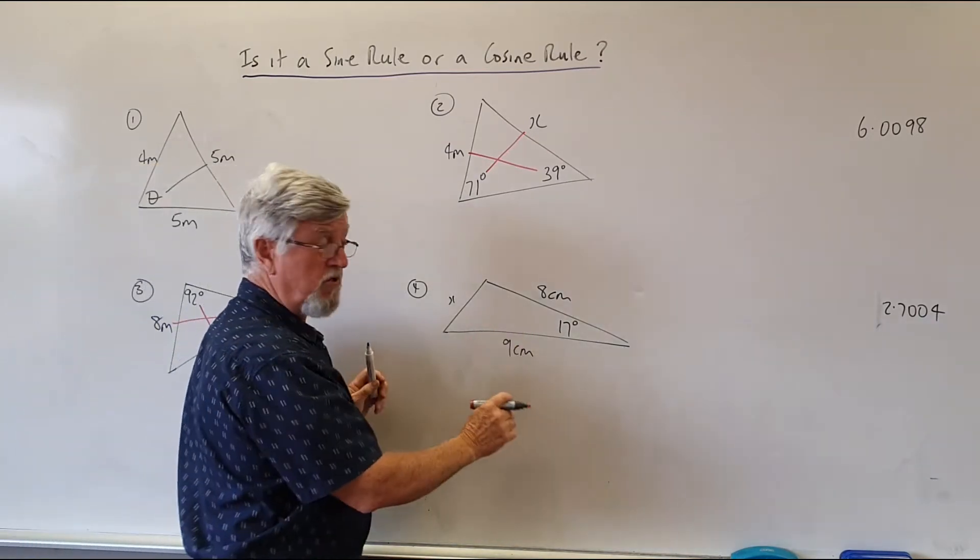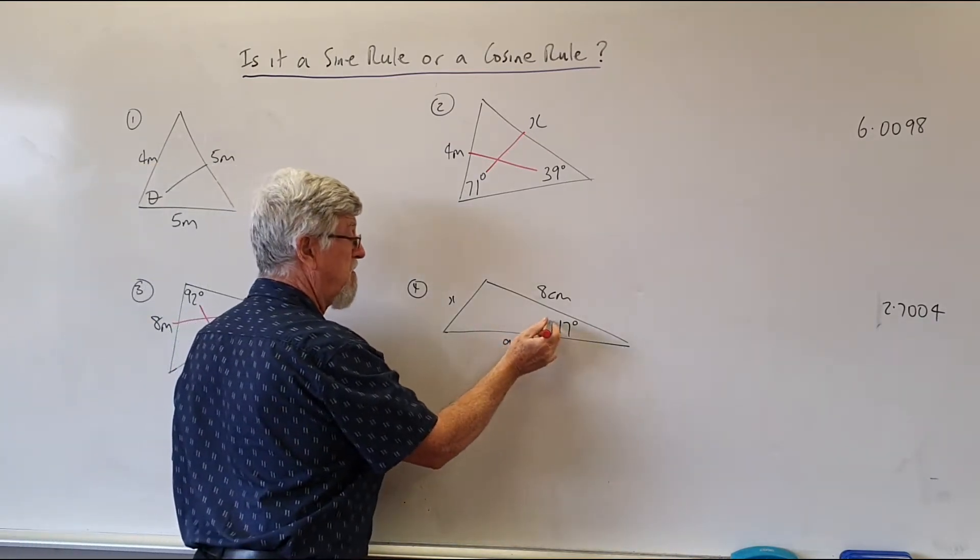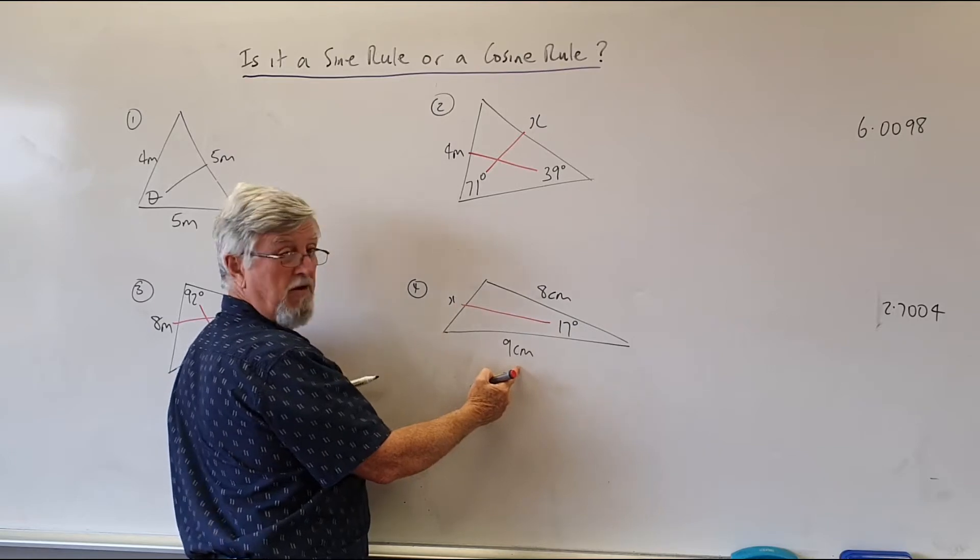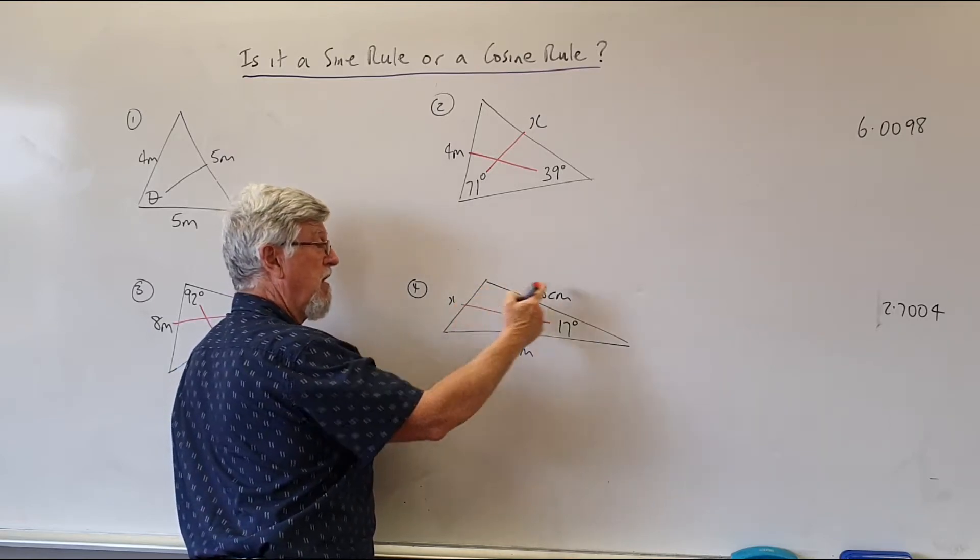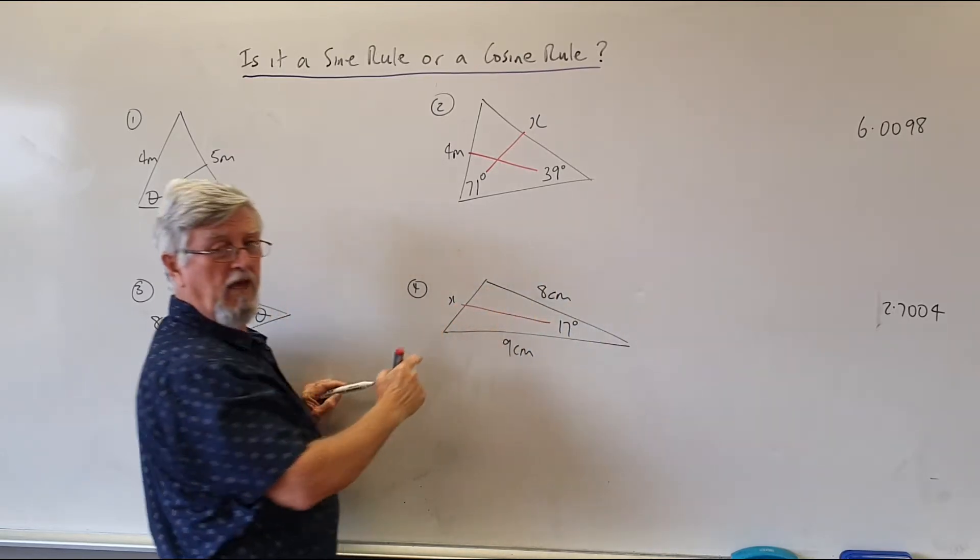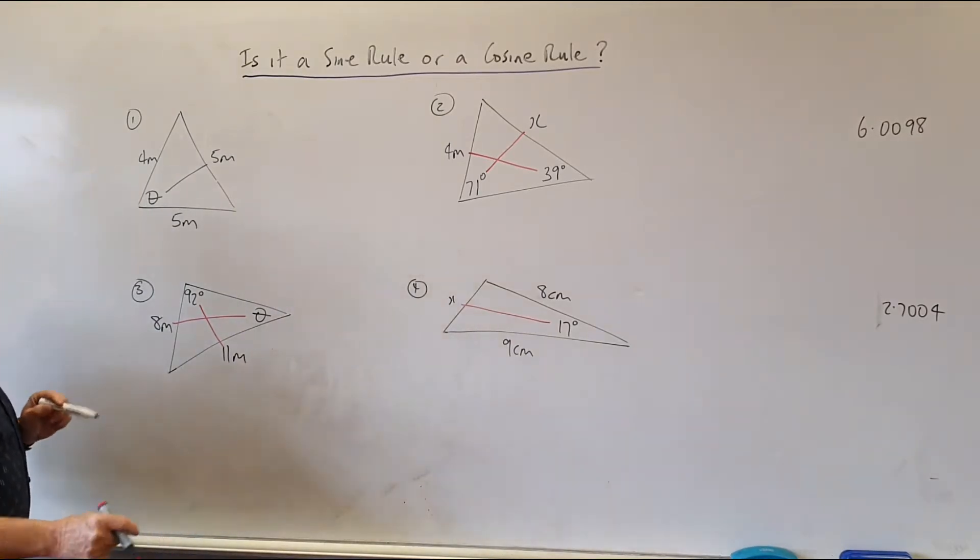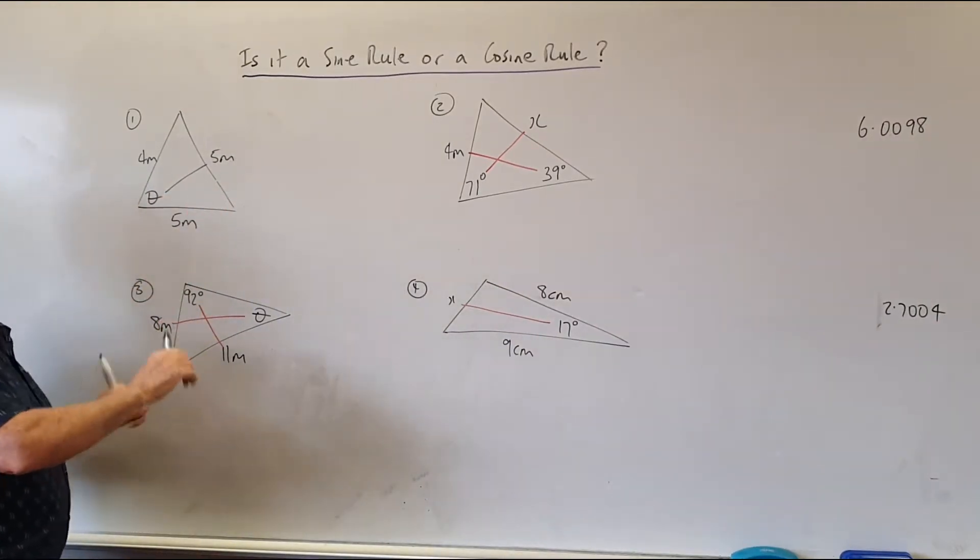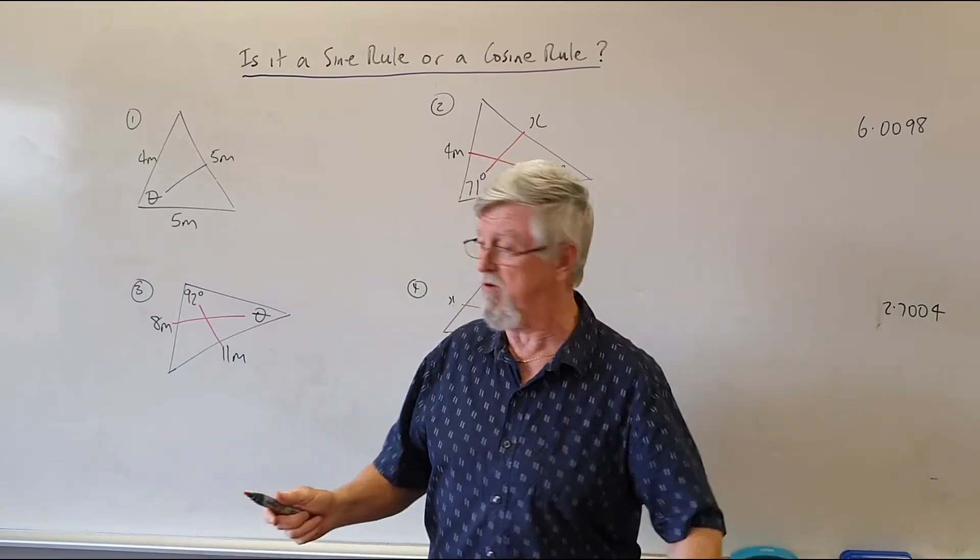This one here is not a sine rule question. You might notice here I've got one pair. I know that number, but I don't know that angle. I know that number, but I don't know that angle. So I've only got one pair. One of the other things is some people will look and they'll just always think sine, if it's not sine, I'll go for a cosine rule.